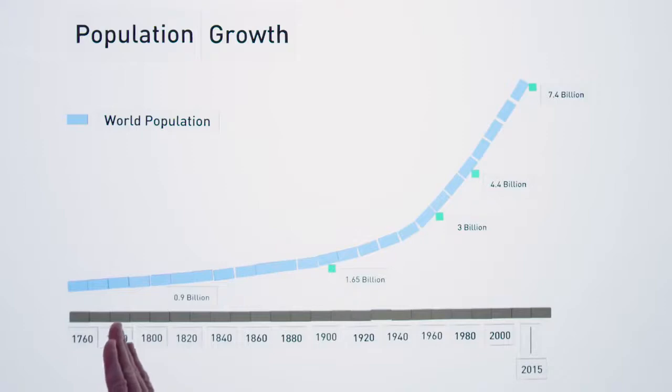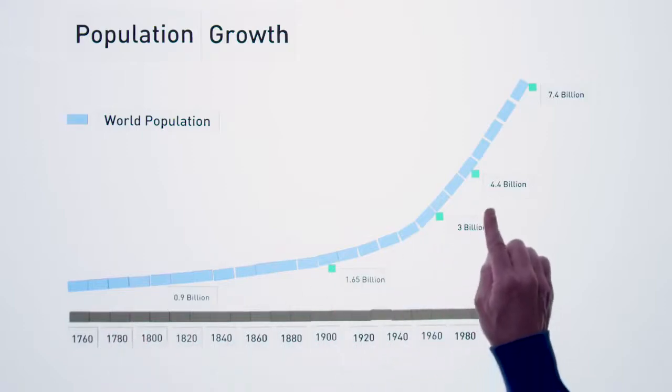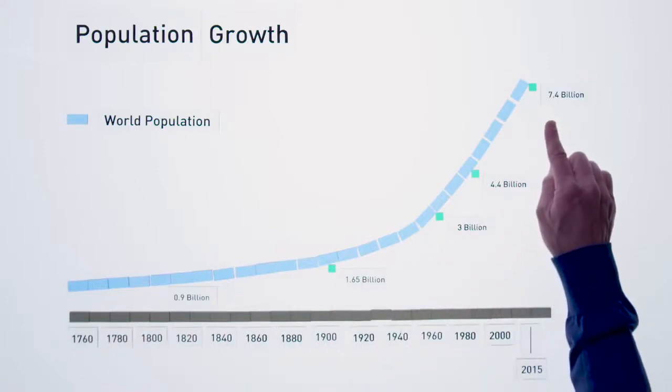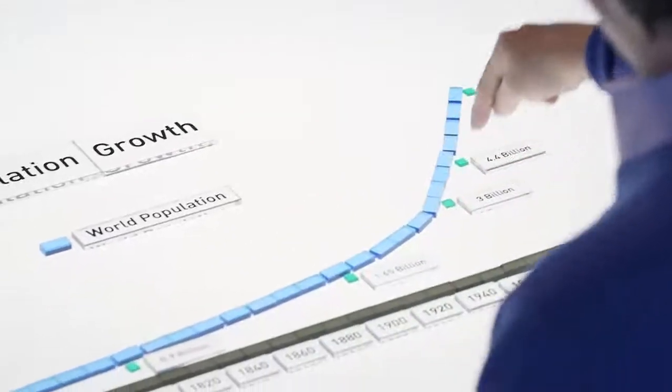We go from less than a billion in 1800, and then 3, 4, 5, 6, and 7.4 billion where we are today, happening even faster.